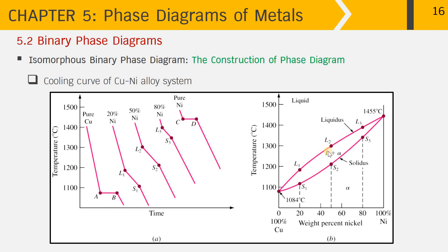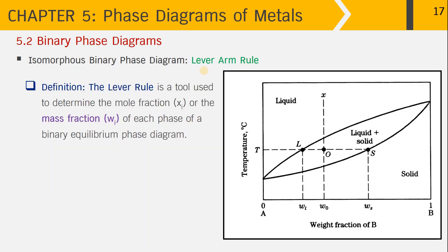The liquidus line separates the liquid phase from any other phases, and the solidus line separates the solid phase from any other phases. At 0% nickel (100% copper) the melting point is 1084°C, and at 100% nickel the melting point is 1455°C. For calculating the amount of phase, we need to learn about the lever rule, or lever arm rule.